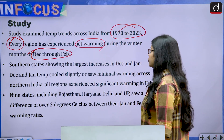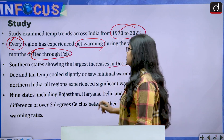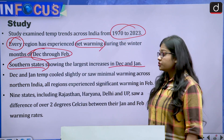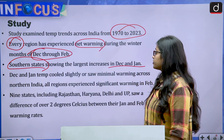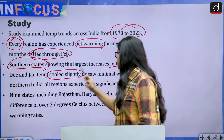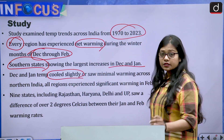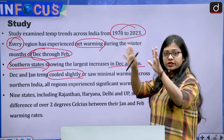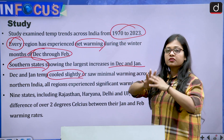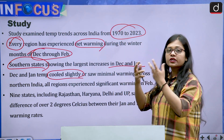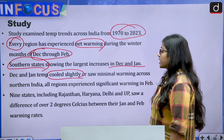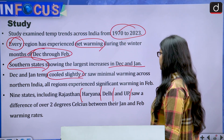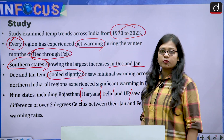The southern states are showing the largest increase in December and January temperatures. December and January temperatures cooled slightly or saw minimal warming across northern India, but all regions experienced significant warming in February. Across all of India, temperatures are increasing — somewhere more, somewhere less — but overall they are rising.